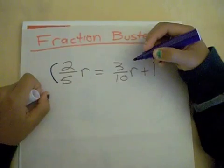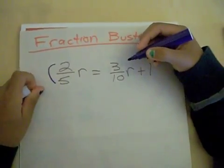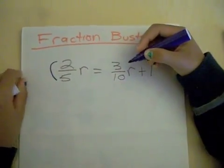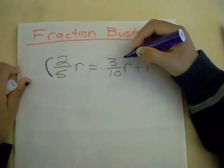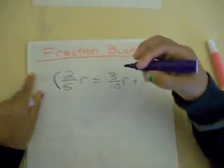Equals 3 over 10th R plus 1. You're putting in some parentheses, I see. Keep going.